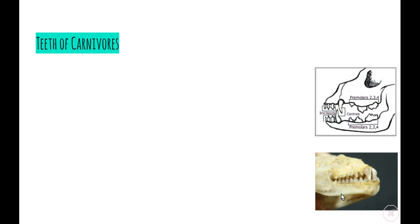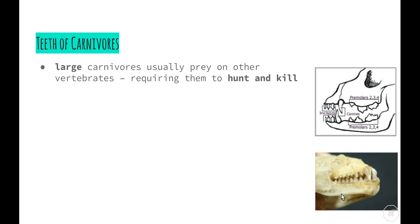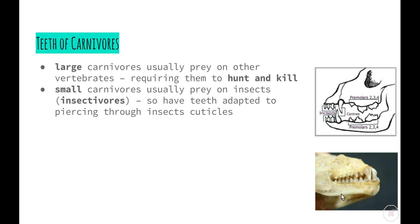Moving on to carnivores: large carnivores such as tigers, lions and bears usually prey on other vertebrates, so they are required to hunt and kill them. They obviously need larger teeth to initially kill their prey before they can eat it. Smaller carnivores usually prey on insects and are sometimes referred to as insectivores. They have teeth adapted to piercing through the cuticles of insects — the shells and exoskeletons — so that they can eat the insect.